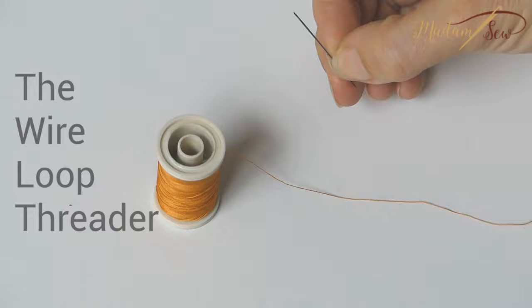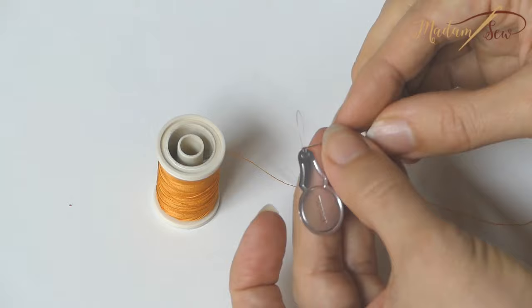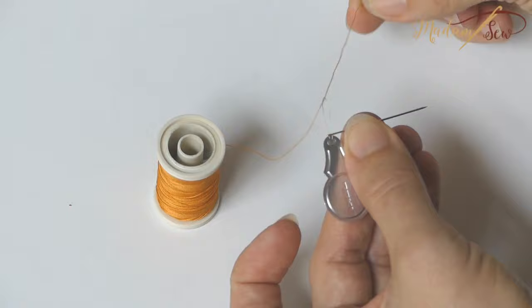Now let's call in the help of some nifty tools. The wire loop threader is the first one. The little simple tool that is in most basic sewing sets. You just push the loop through the eye, thread in the loop, and you pull.